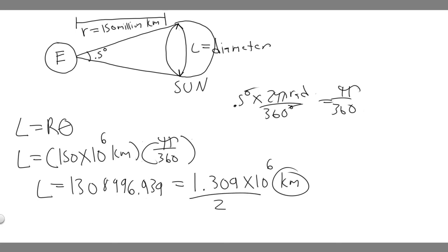So dividing by two, because this is the diameter. If we divide by two, it's going to give us the radius. So if you do this number divided by two, you'll get 654,498.46. So it's basically 6.5, and I'm just going to round it up to 7. So it's going to be 7 times 10 to the 5 kilometers, because this is in kilometers.